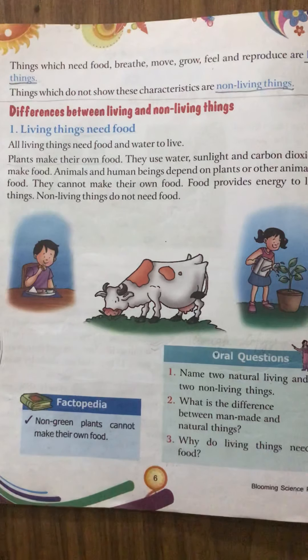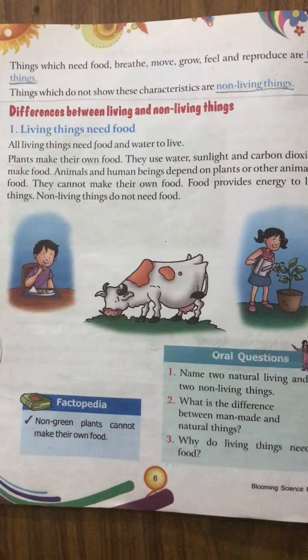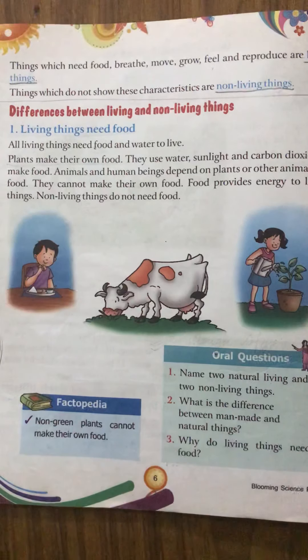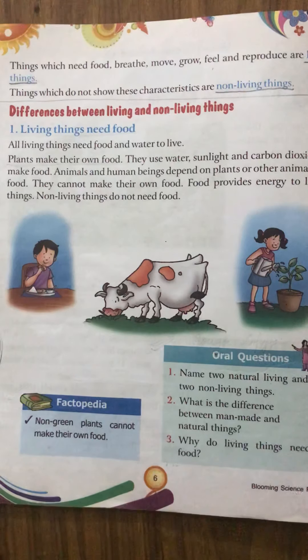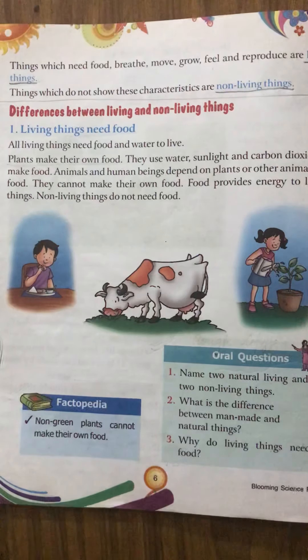Before moving further, I will revise all four points. Man-made things: things that are made by man are called man-made things. Natural things: things that are created by nature are called natural things.